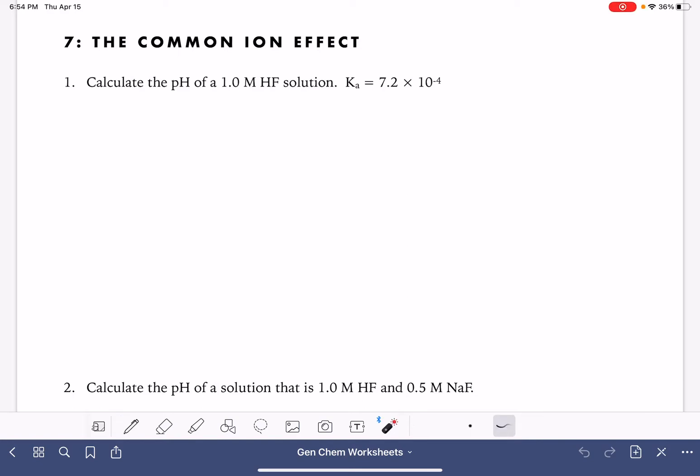On this worksheet, we're going to be taking a look at the common ion effect. We're going to solve two problems. In the first problem, we're just going to be calculating the pH of a 1 molar HF solution. That's a weak acid. We know it's a weak acid because the problem gives us a Ka.